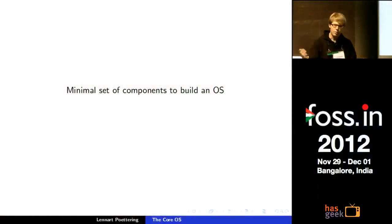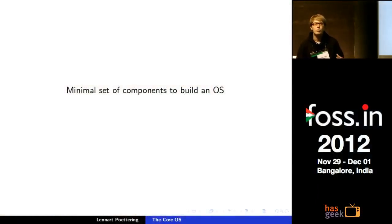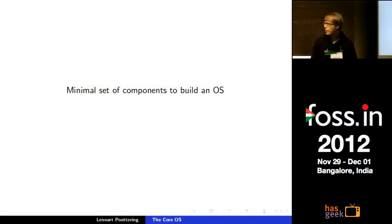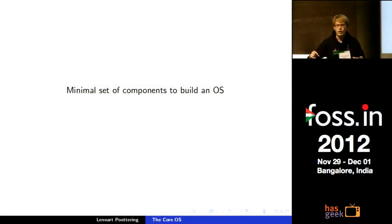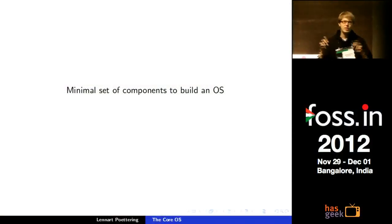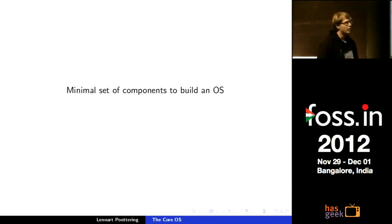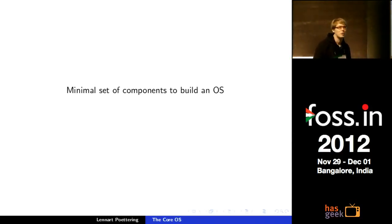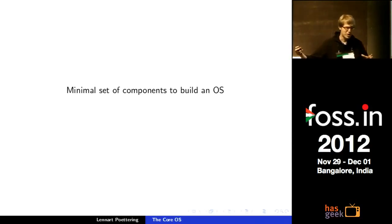To summarize this vision: what Systemd as the CoreOS should be is a minimal set of components to build an OS from. Of course, by a waste of time the minimality increased bit by bit — most computing programs end up growing that way.